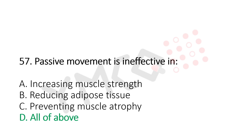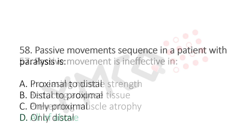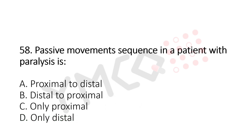Question number 58: Passive movement sequence in a patient with paralysis is: Option A, proximal to distal; Option B, distal to proximal; Option C, only proximal; Option D, only distal. The answer is Option A, proximal to distal.